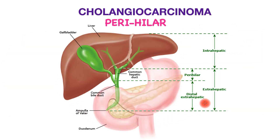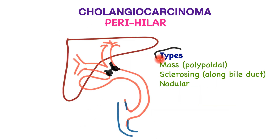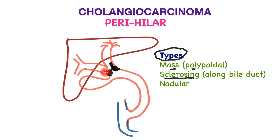This diagram explains the sites of cholangiocarcinoma: intrahepatic within the liver, or outside the liver as extrahepatic bile duct cancers — perihilar being the commonest, and the distal variety further towards the pancreas. The main types of perihilar cholangiocarcinoma consist of mass forming or polypoidal, where they form a small lump; much more commonly the sclerosing type, infiltrating and traveling up and down the bile tubes themselves; and finally the nodular subtype.